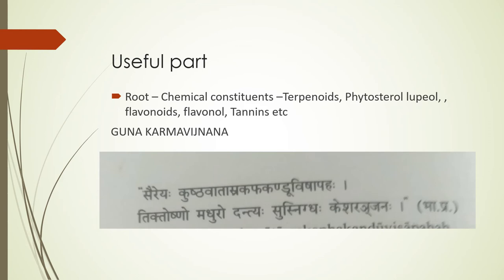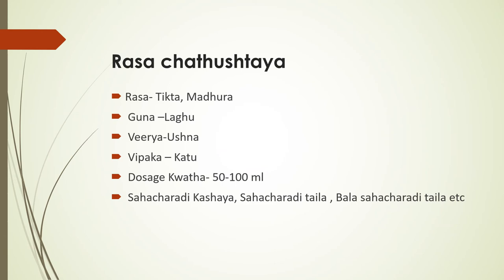General karmas are vishabaha and kesharanjana. Classify them under three headings: Keshadra karma, doshatna karma, and rogagna karma. Rasa is mainly tikta with madhurya anurasa. Guna is laghu, virya is ushna, vipaka is kadu. Kvadha dosage is 50 to 100 ml. Main yogas are Sahajaradi kashaya, Sahajaradi taila, and Bela sahajaradi taila.